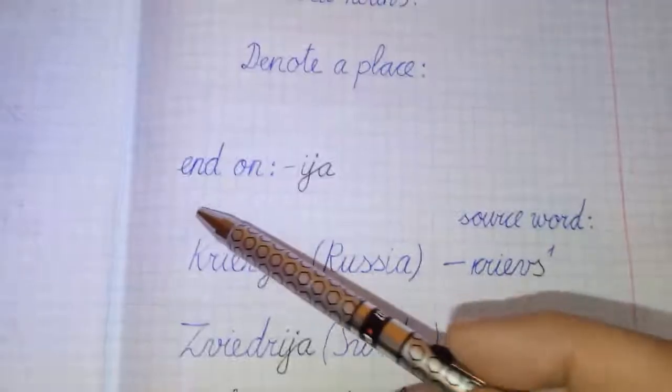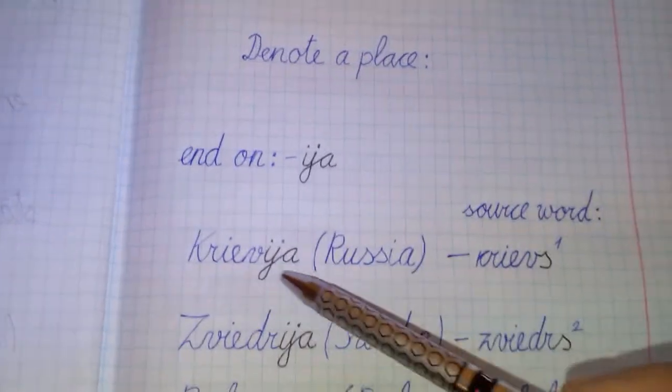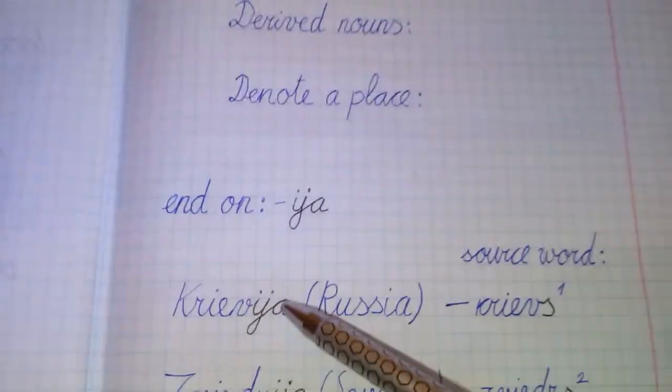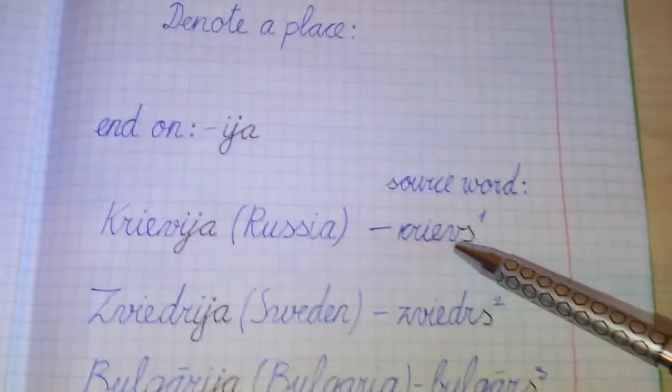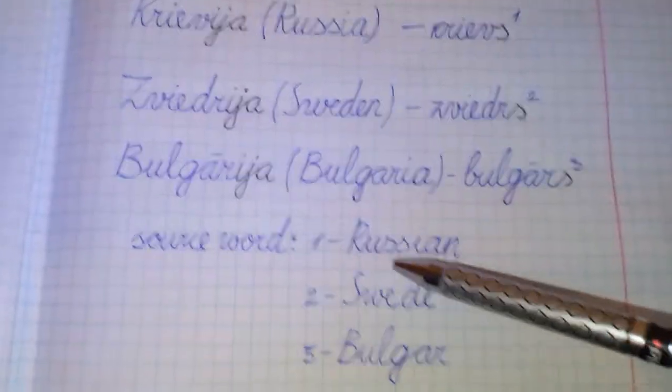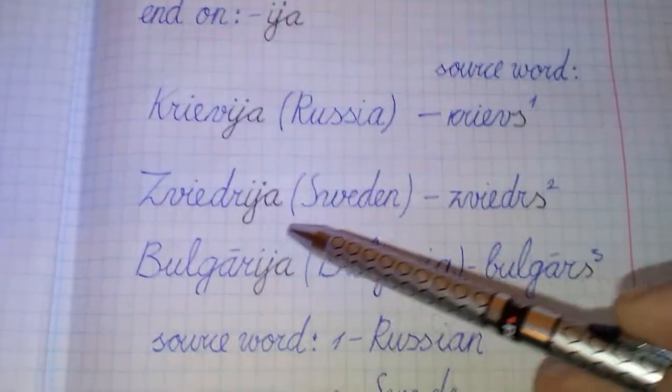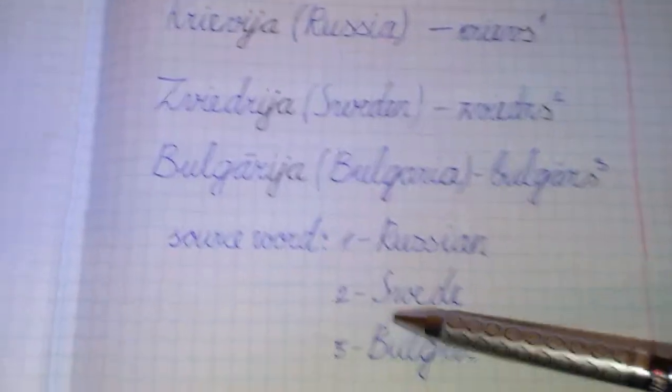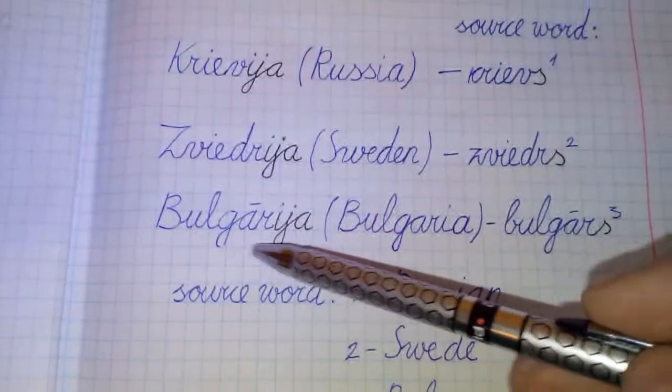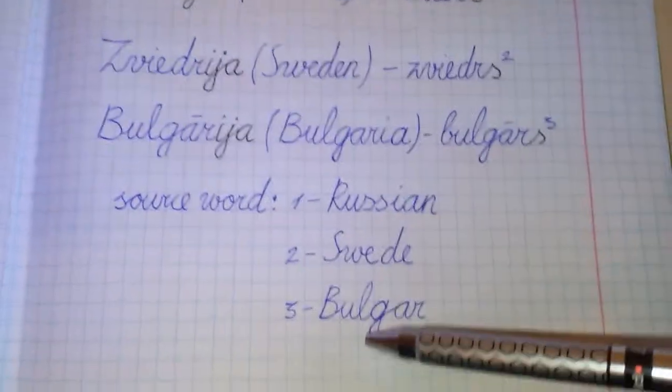Let's start with ending -ia. For example, Krievija (Russia), ending in -ia, and the source word is Krievs which means Russian. Zviedrija (Sweden), source word Zvedrs, Swede. Bulgārija (Bulgaria), source word Bulgārs, Bulgarian.